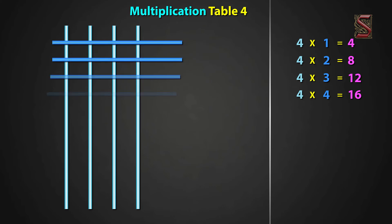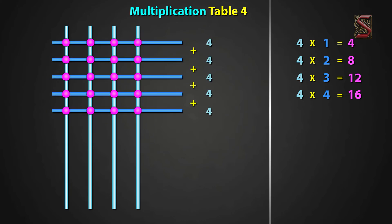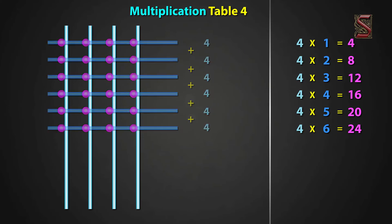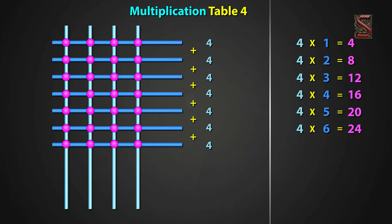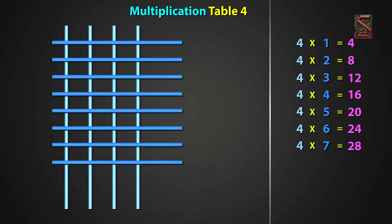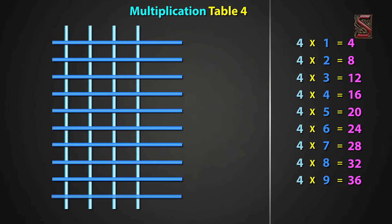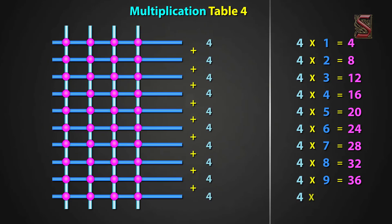For 5 times, draw 5 sleeping lines. We have 20 meeting points. Now, 4 five times equal to 20. For 4 six times, draw 6 sleeping lines. We have 24 meeting points. Now, 4 six times equal to 24. For 7 times, draw 7 sleeping lines. We have 28 meeting points. So, 4 seven times equal to 28. For 8 times, draw 8 sleeping lines. We have 32 meeting points. So, 4 eight times equal to 32. For 9 times, draw 9 sleeping lines. We have 36 meeting points. Now, 4 nine times equal to 36. For 10 times, draw 10 sleeping lines. We have 40 meeting points. Now, 4 ten times equal to 40.